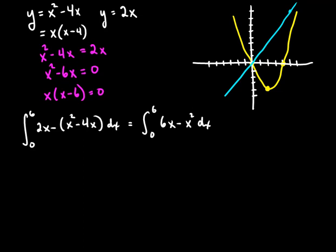6x to the second power over 2 is going to give me 3x squared. Then minus x to the third over 3 from 0 to 6. And we're ready to go with this.